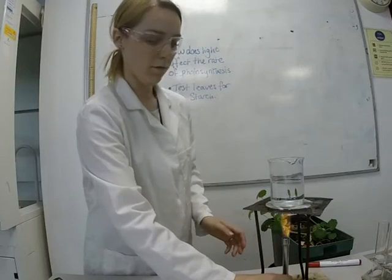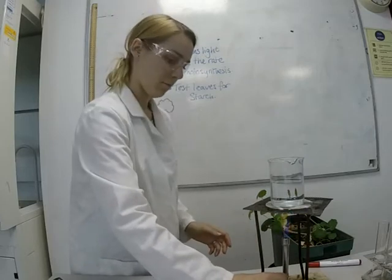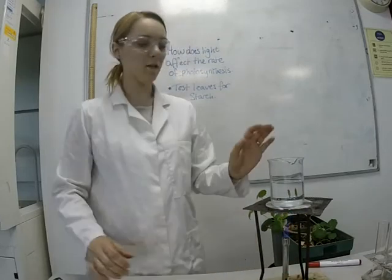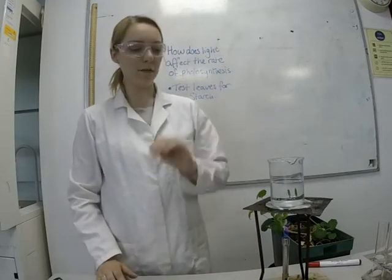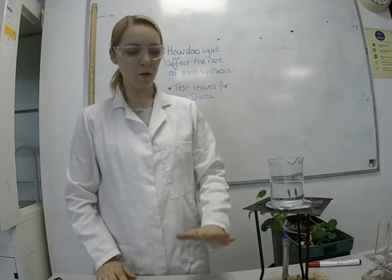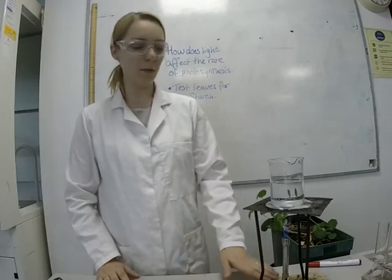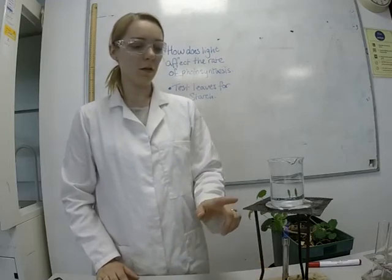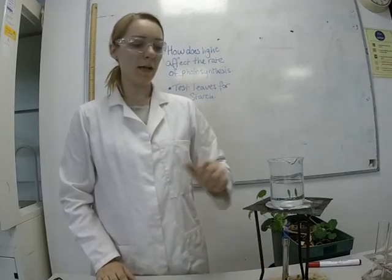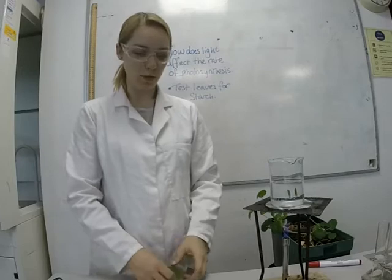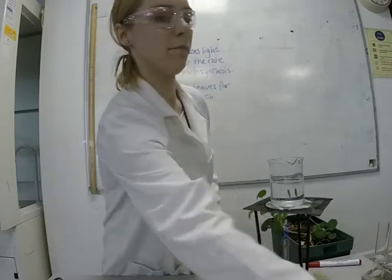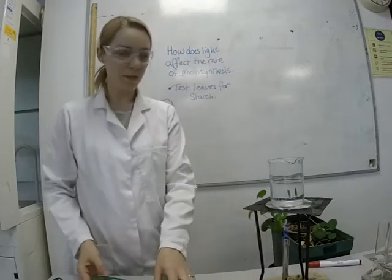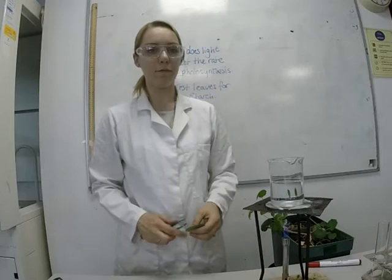To start this off, I've taken hot water from the tap. I've got a heat-proof mat, Bunsen burner, tripod, gauze, and my boiling water. Once that's started to boil, I can put in my leaf.